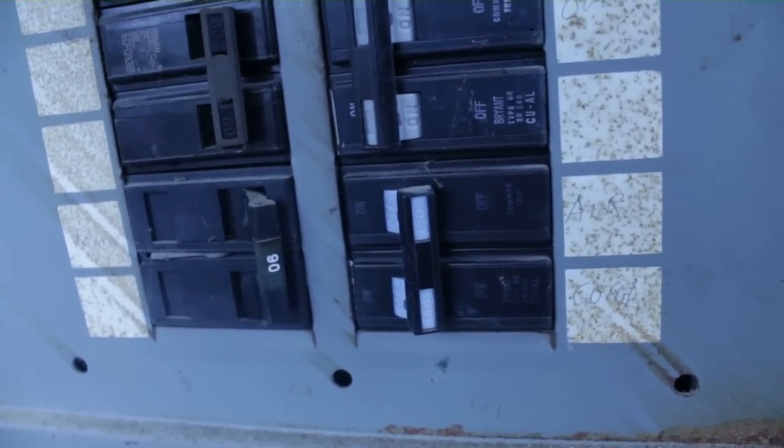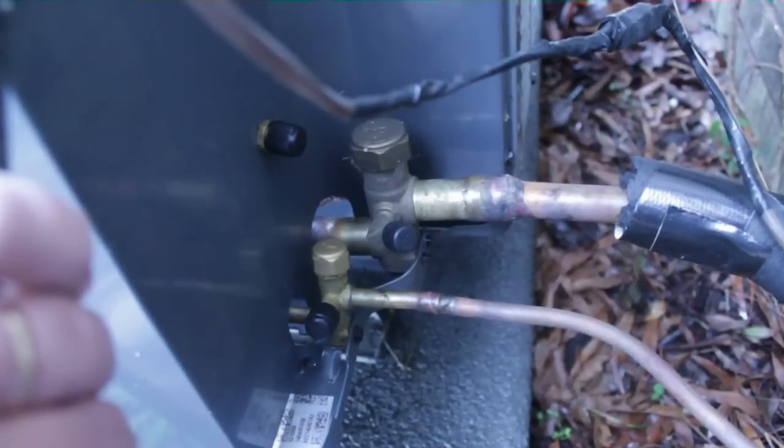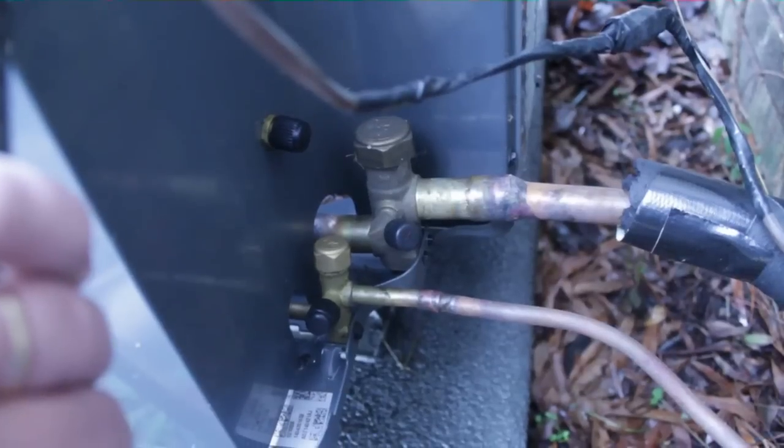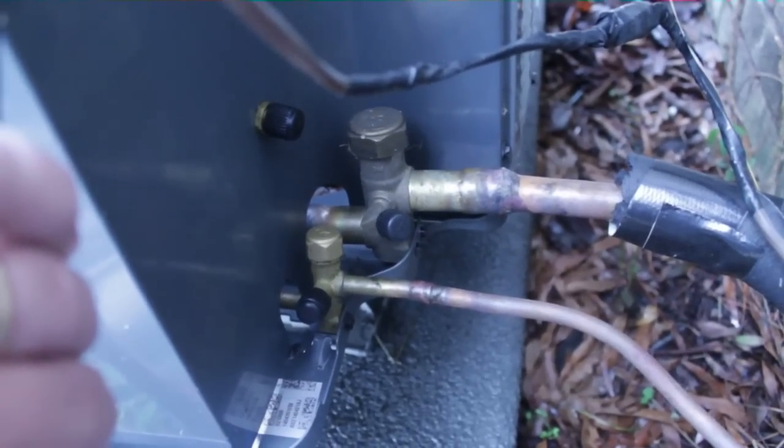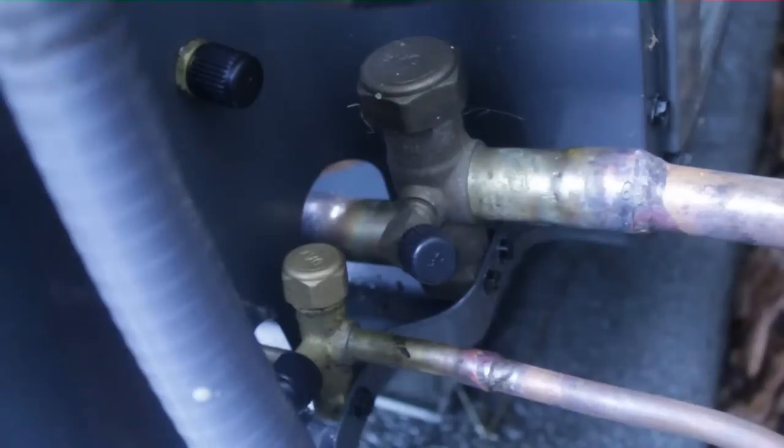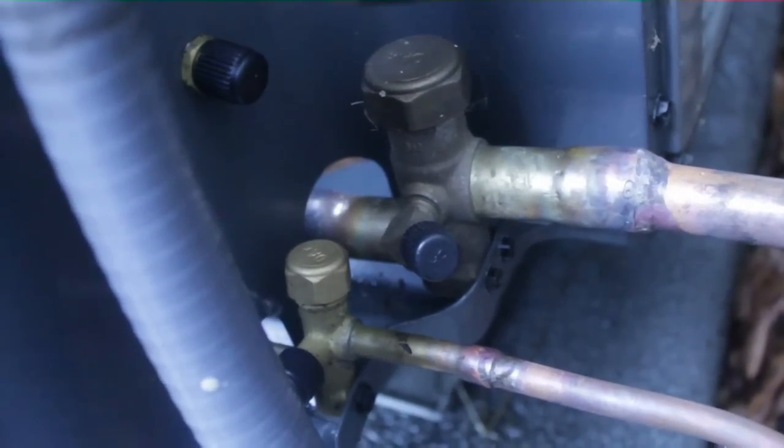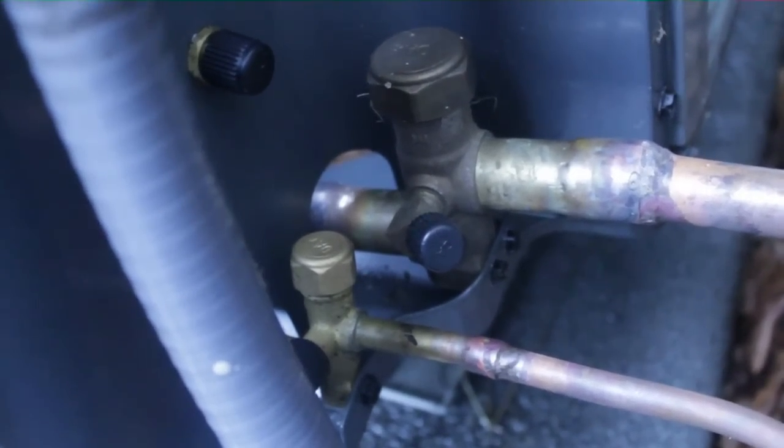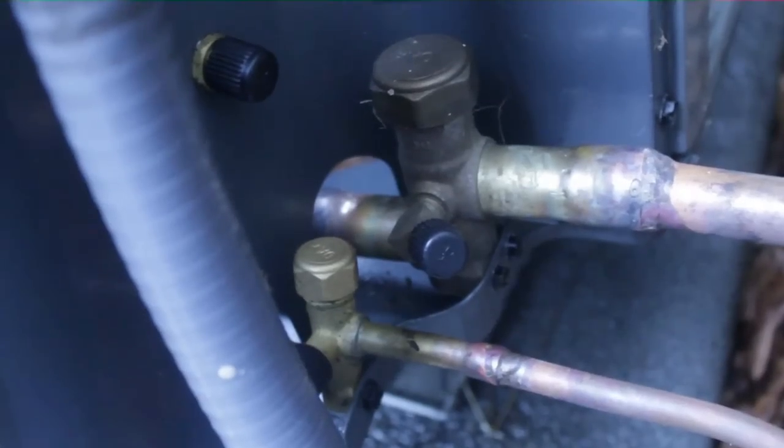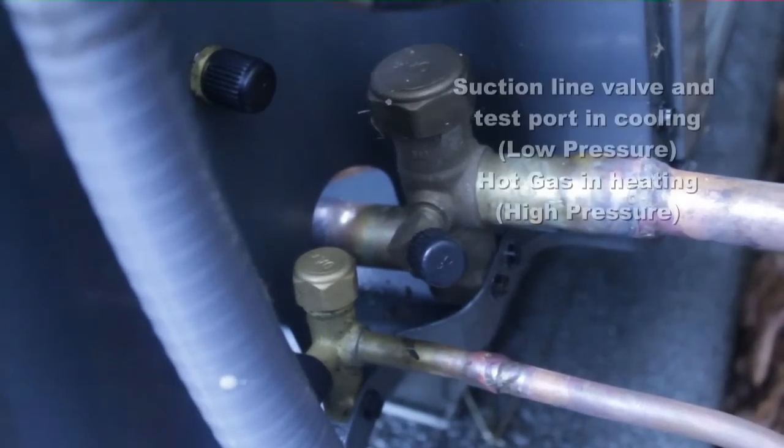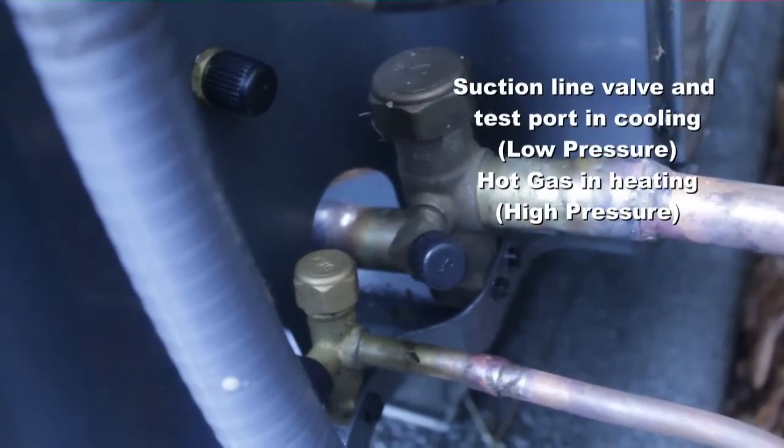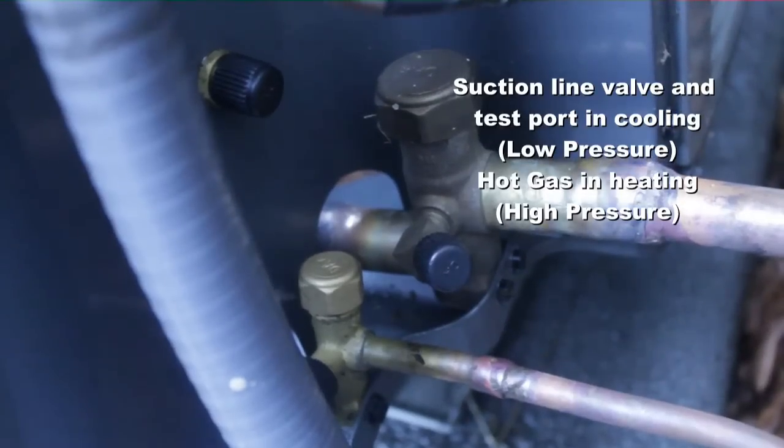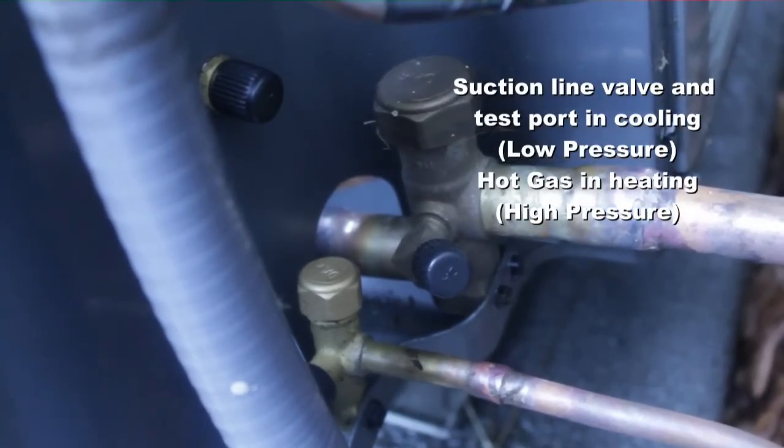There are three ports here. We'll get a closer look at all of those and I'll label them on the screen. The first one, we'll refer to them in their air conditioning name, is the suction line—the larger line on the top right side of the screen.